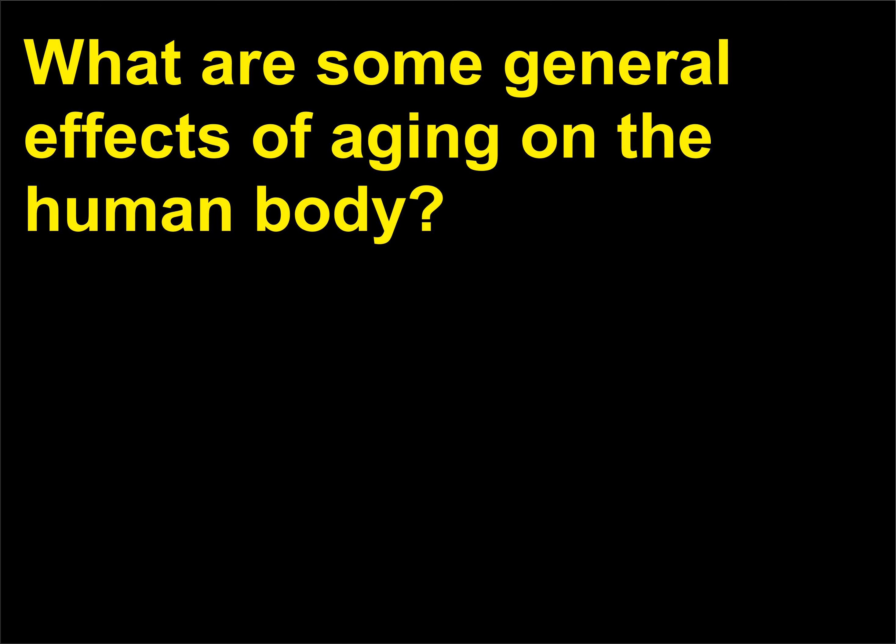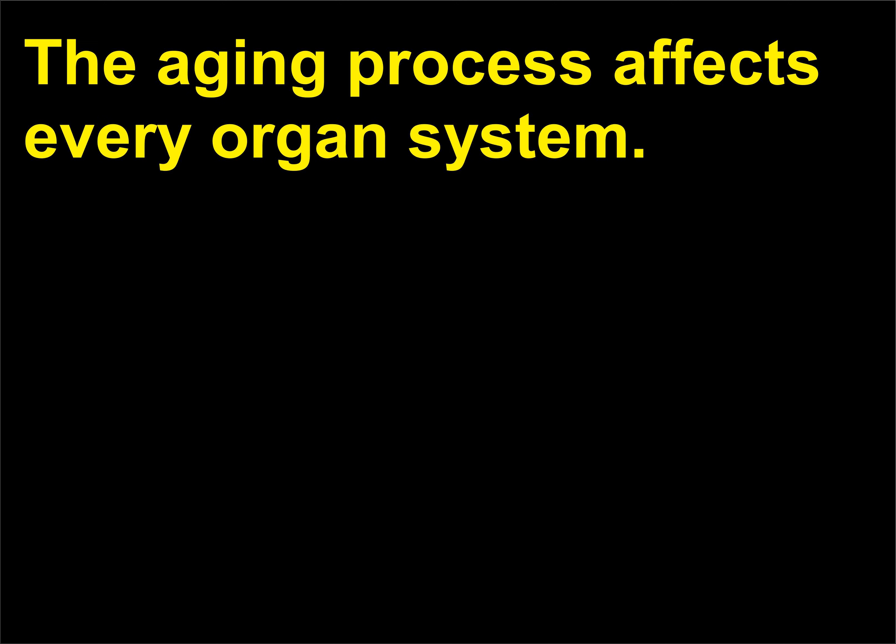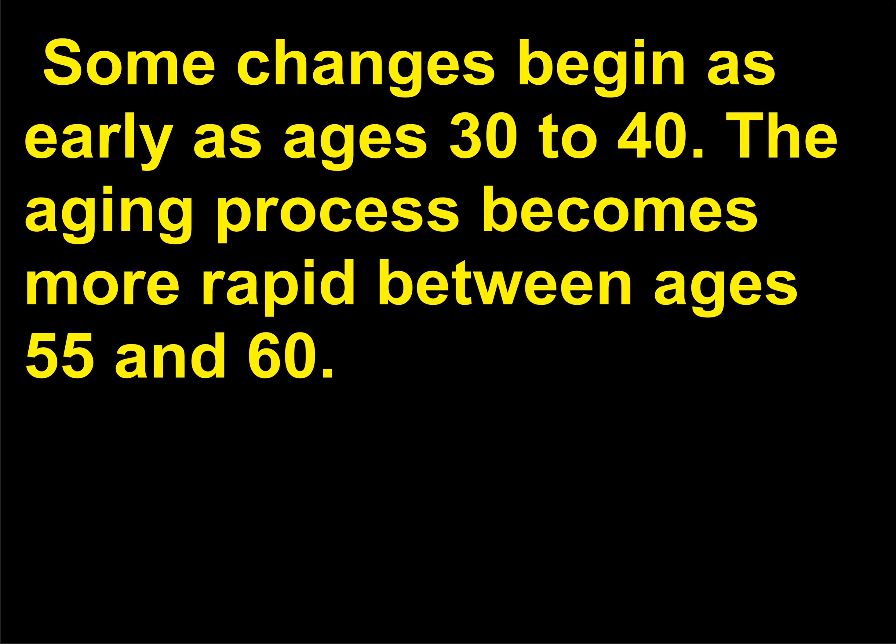What are some general effects of aging on the human body? The aging process affects every organ system. Some changes begin as early as ages 30 to 40. The aging process becomes more rapid between ages 55 and 60.